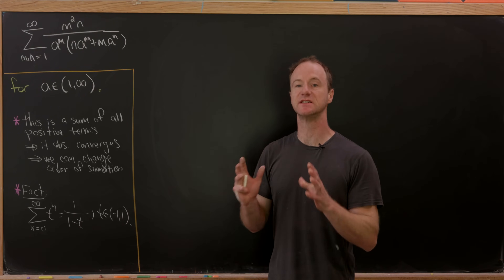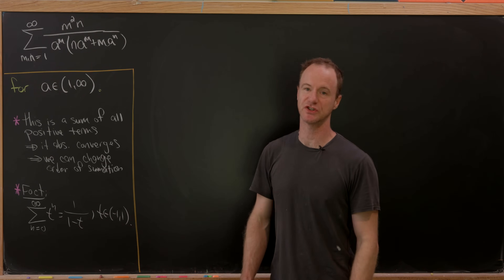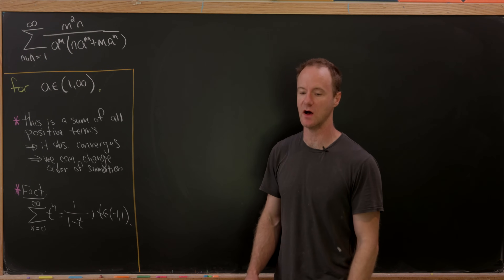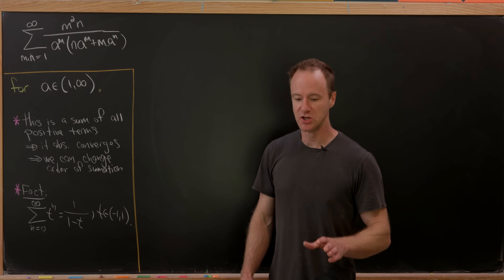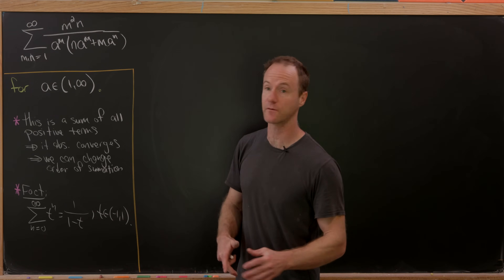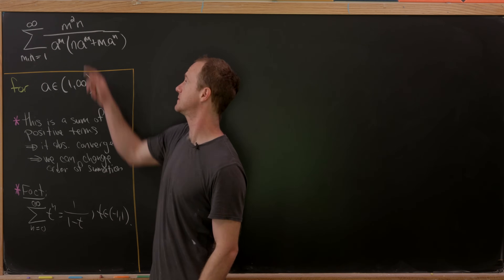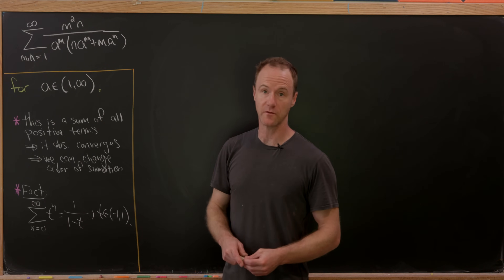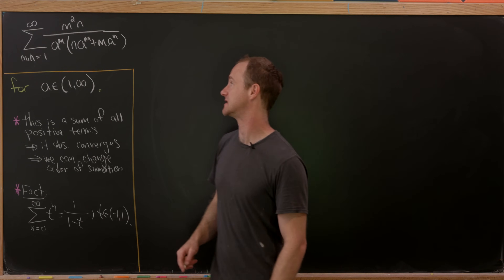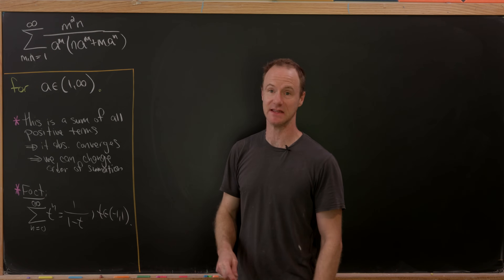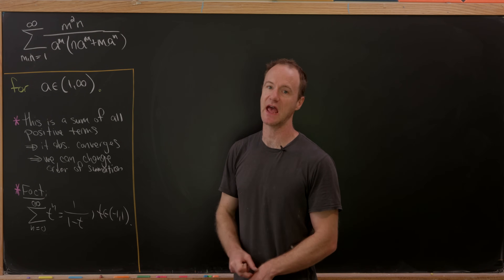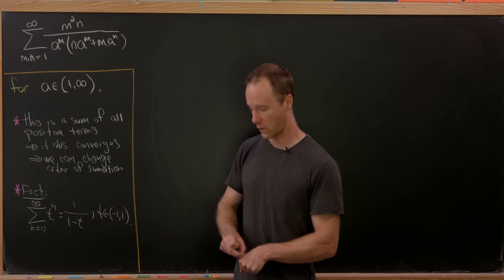Here we have an interesting double sum which depends on a parameter, and we're going to find the closed form. We have the sum as m and n go from 1 to infinity of m squared n over a to the m times n a to the m plus m a to the n. This is for real numbers a larger than 1.